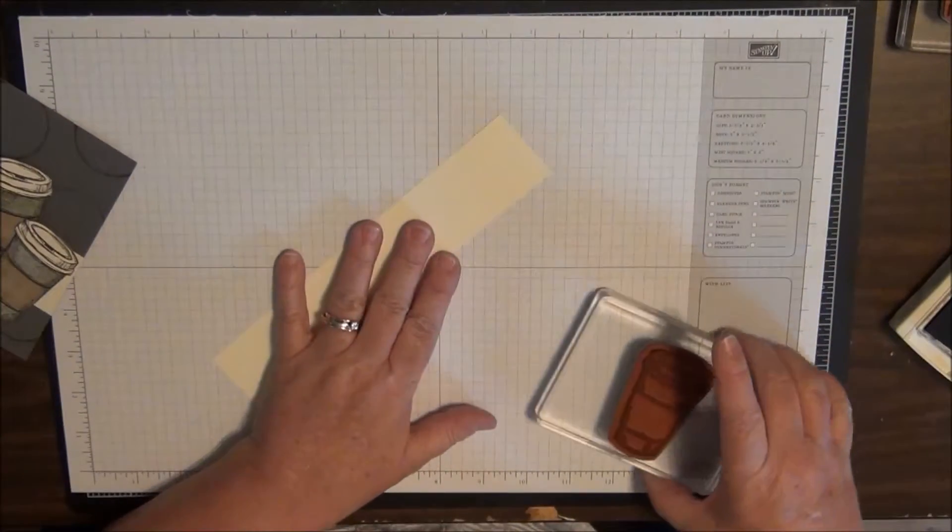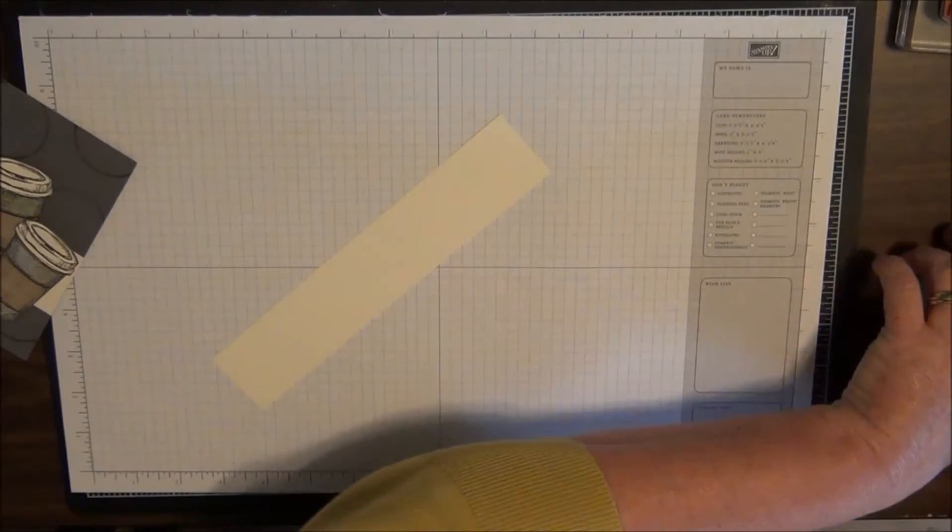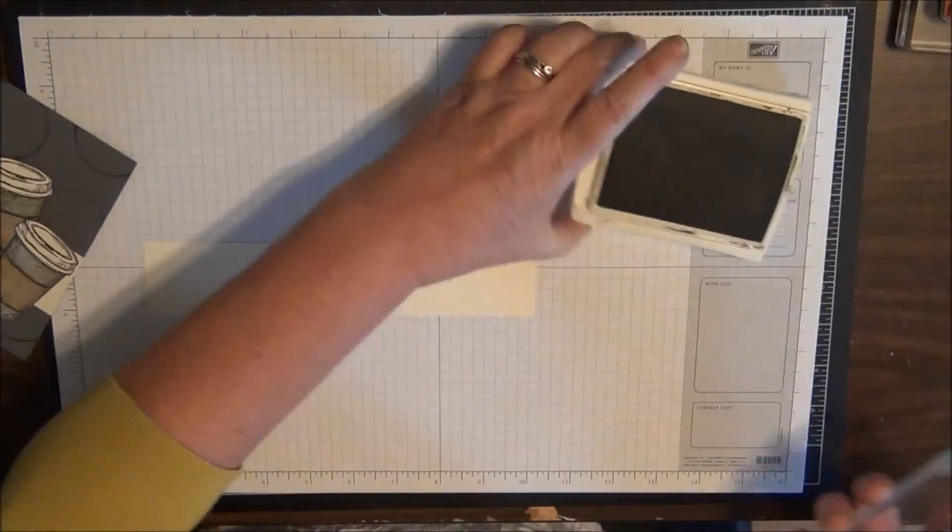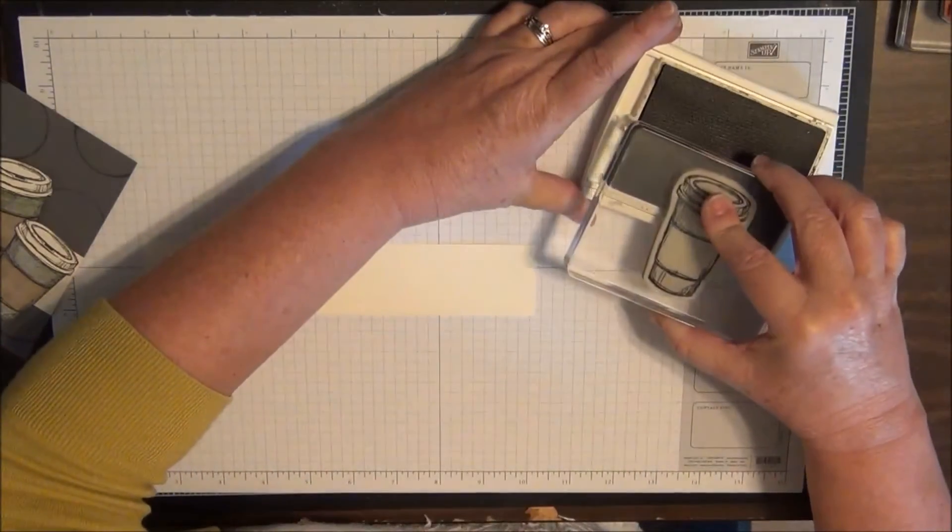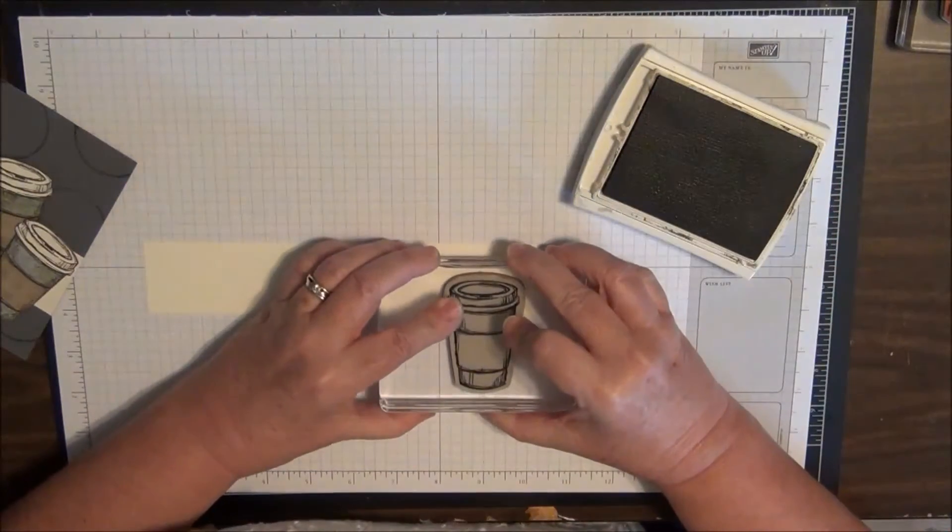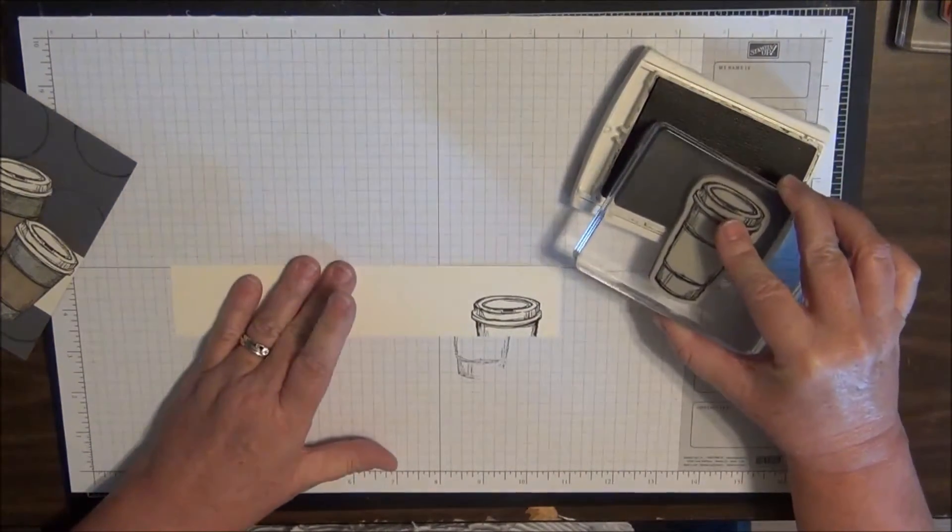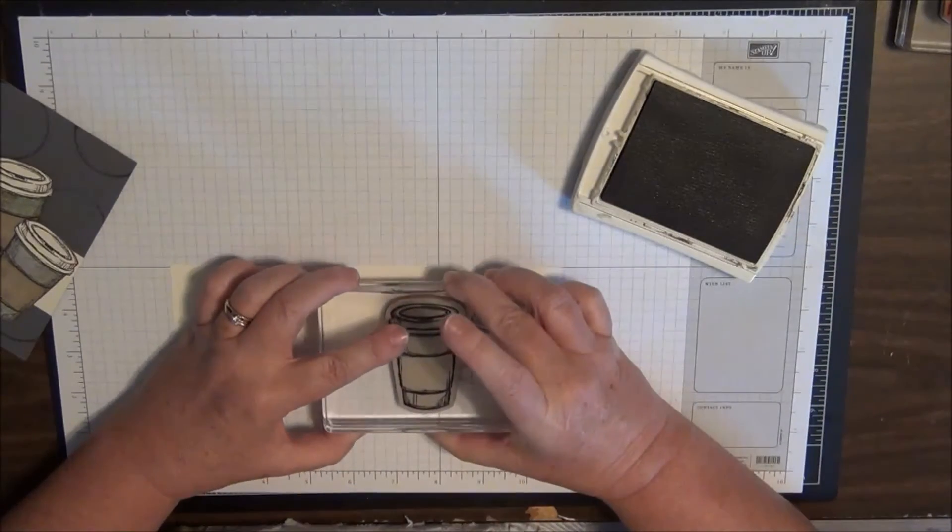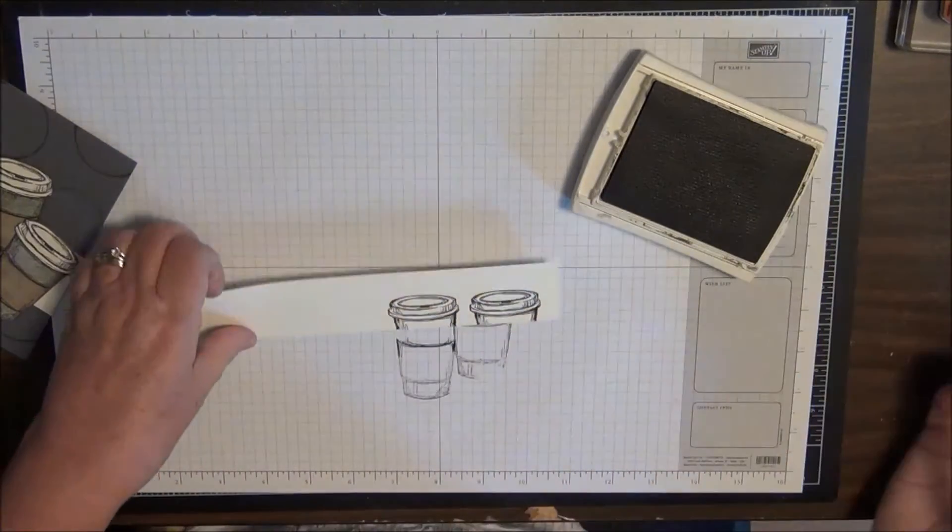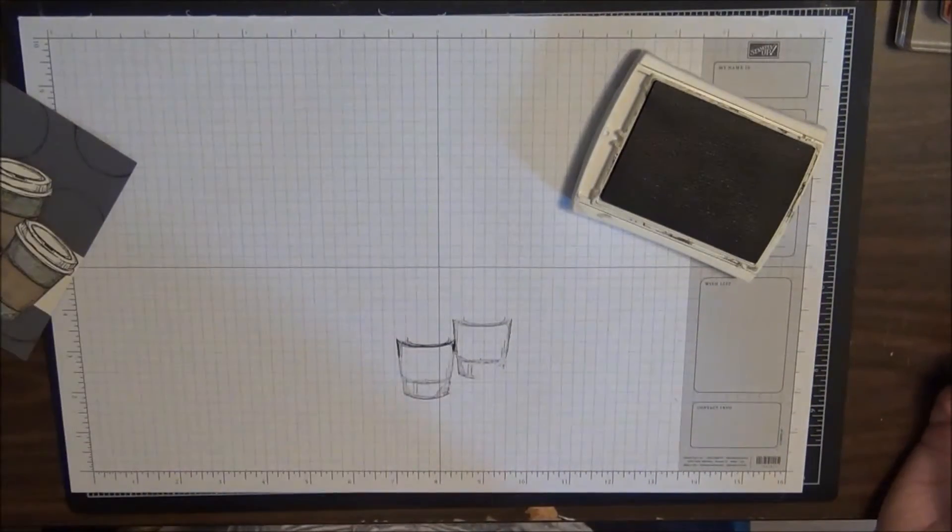Then I'm just going to take a piece of scrap paper, this is Very Vanilla, and now I just want to stamp the top of my coffee cup. So let me ink that and I'll stamp that. All I need is the top. Can you see where I'm going with this?